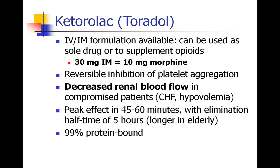Ketorolac, called Toradol, is available in IV or intramuscular formulation. It can be used as the sole drug for perioperative pain control or together with opioids. 30 mg of intramuscular Toradol is said to be as effective as 10 mg of IV morphine. Toradol causes inhibition of platelet aggregation, so we can see some bleeding effects, and it decreases renal blood flow in certain patients — those with heart failure or hypovolemia. The peak effect occurs in 45 to 60 minutes, elimination half-time is about 5 hours (perhaps longer in the elderly), and it's about 99% protein bound.